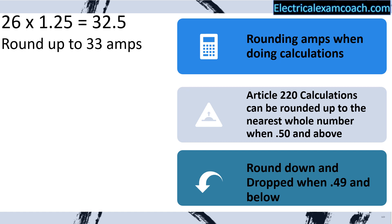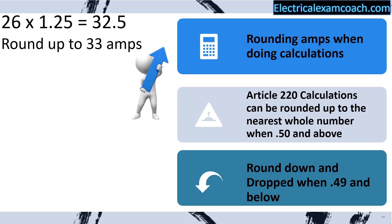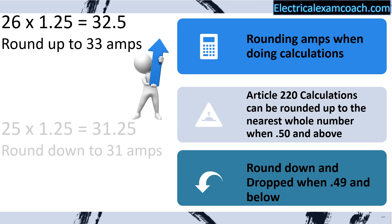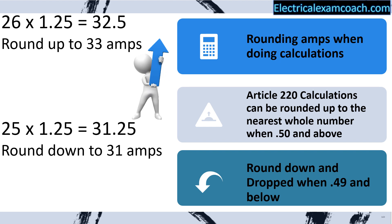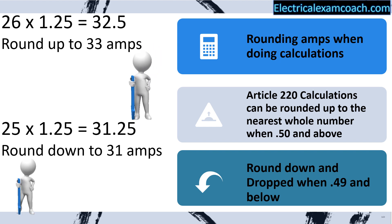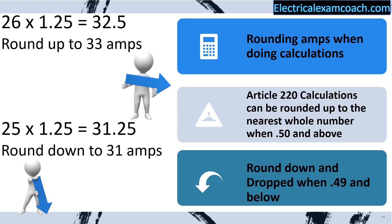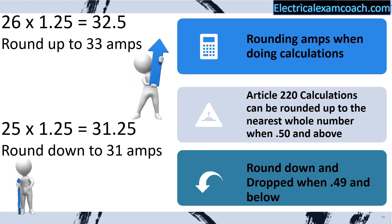Let's imagine we have a scenario of 26 amps, and after we do all of our math, it equals 32.5 amps. In this case, we're going to round up to 33 amps. Now let's imagine a similar scenario where the answer is 31.25 — since that's 0.49 or less, we are going to round down. And that's how we're going to deal with all of our numbers in load calculations.